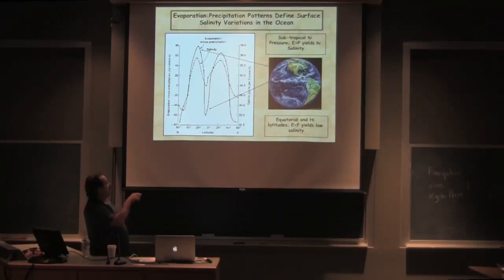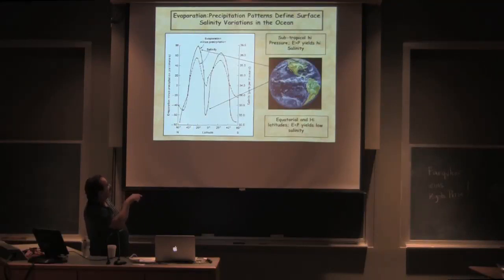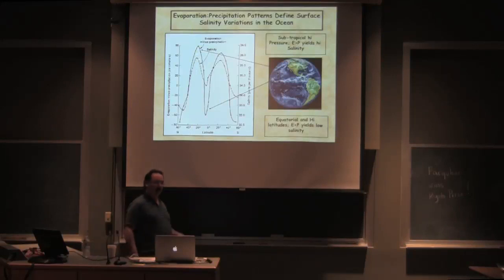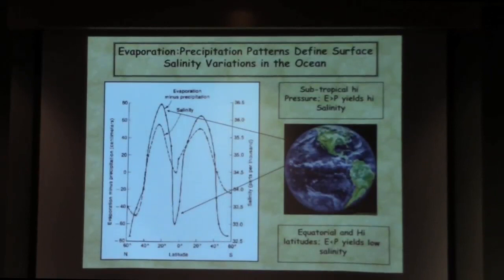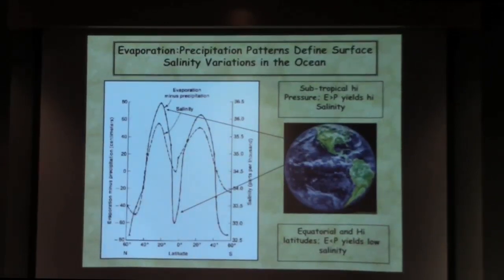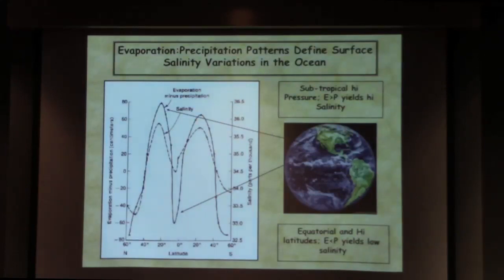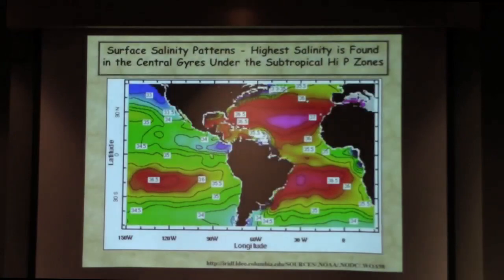If we look at this latitudinally — north at 60 south — you see that underneath the 30-degree gyres we have our highest salinity where evaporation exceeds precipitation. At the equator, where we have the ITCZ and a lot of precipitation, we have our lowest salinity — precipitation exceeds evaporation. When you look at this, you see exactly what you would expect to see.